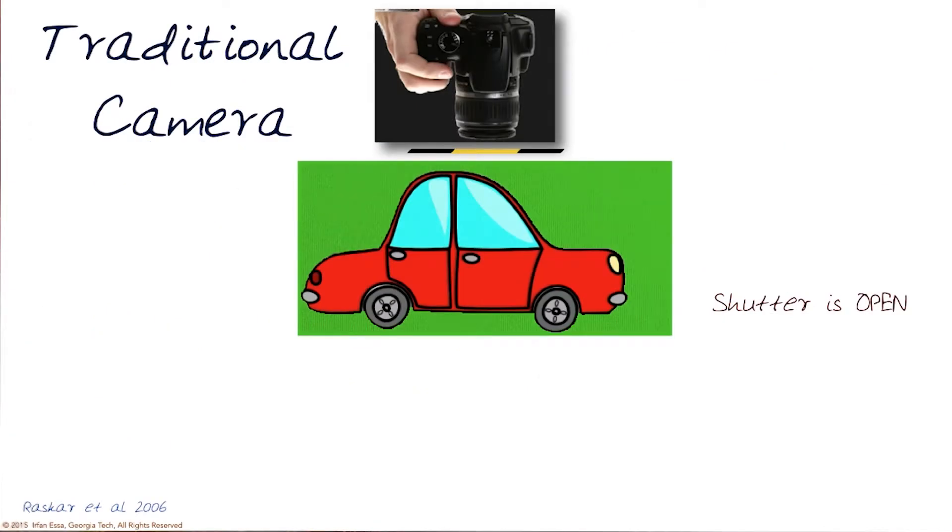Let's look at this series of examples. A traditional camera, when it takes a picture and the shutter is open, you get one frame.